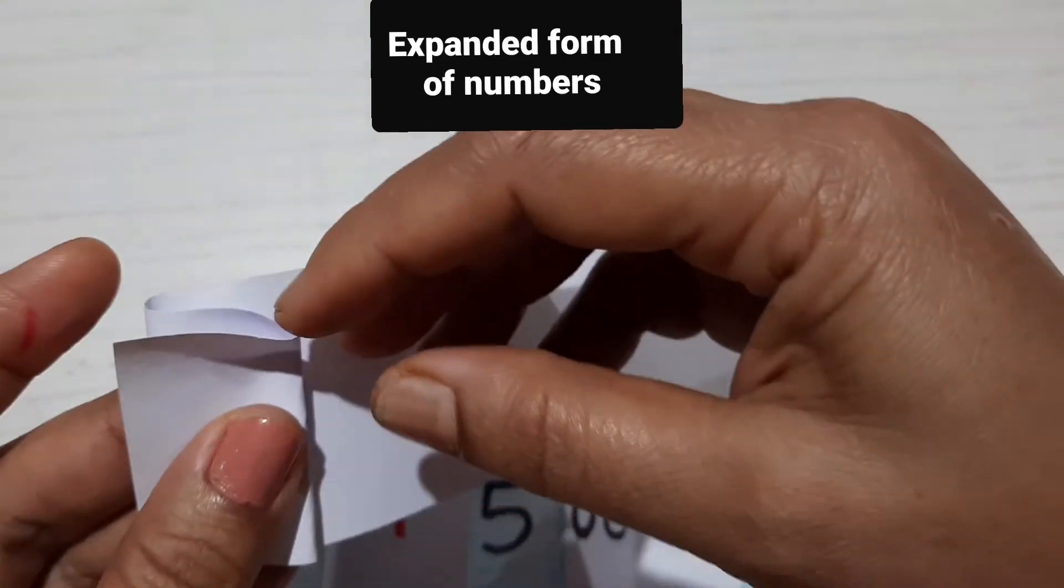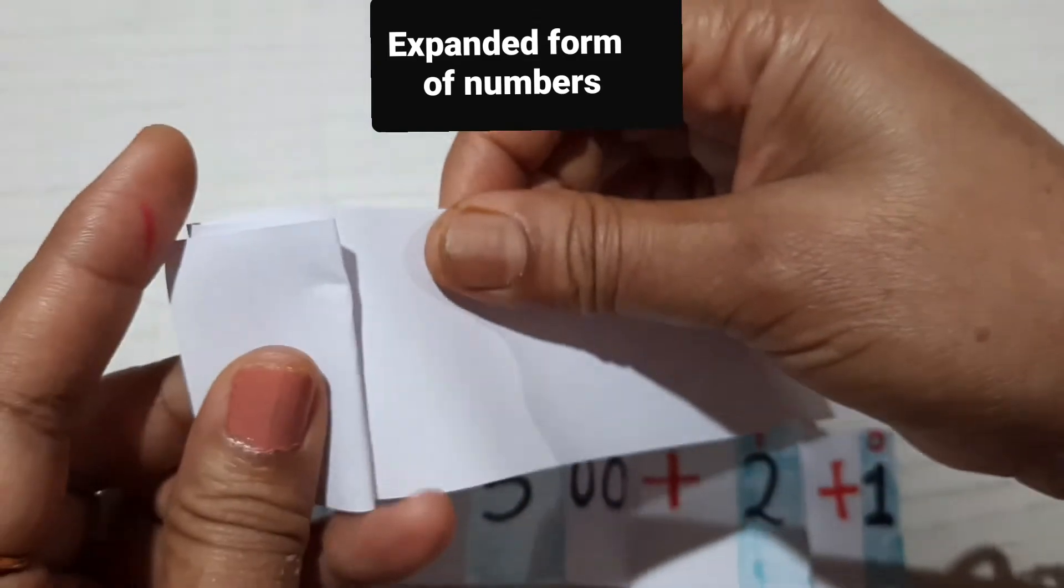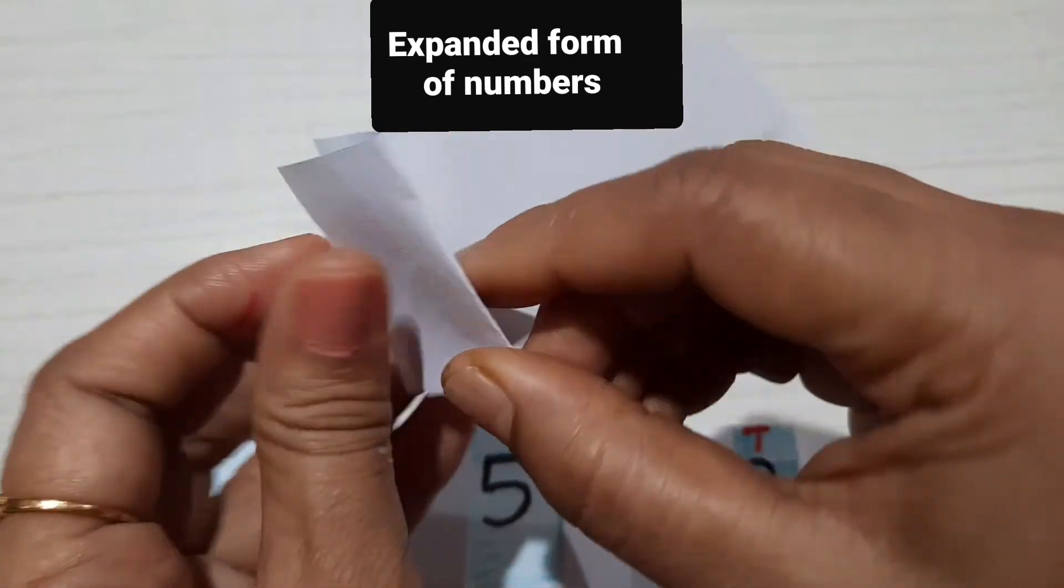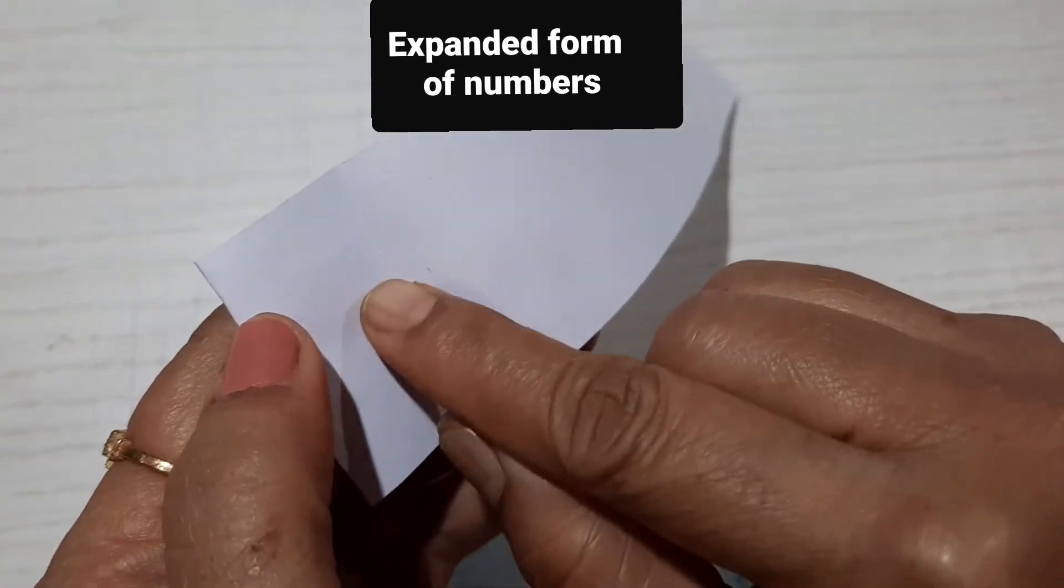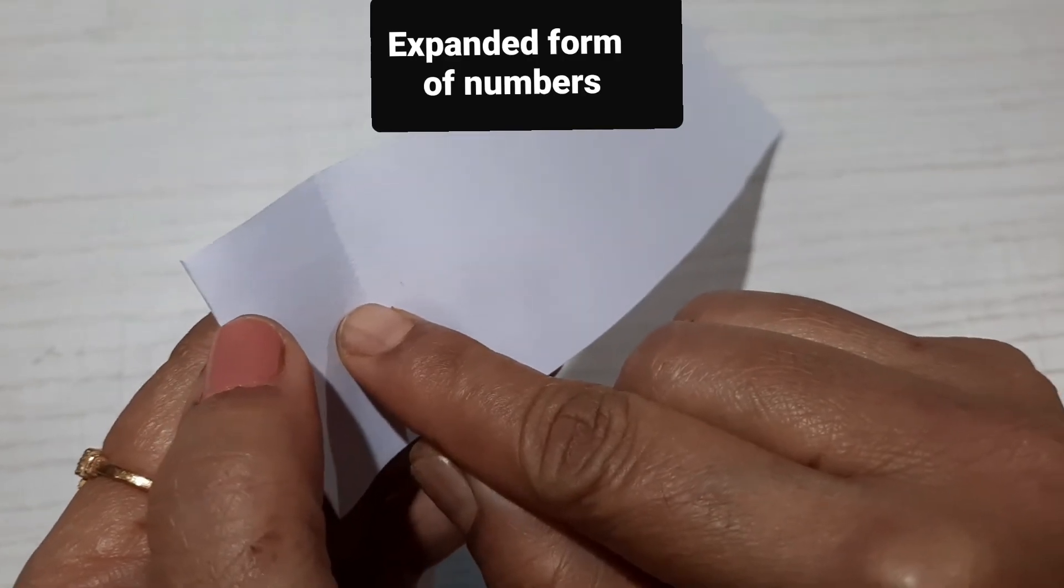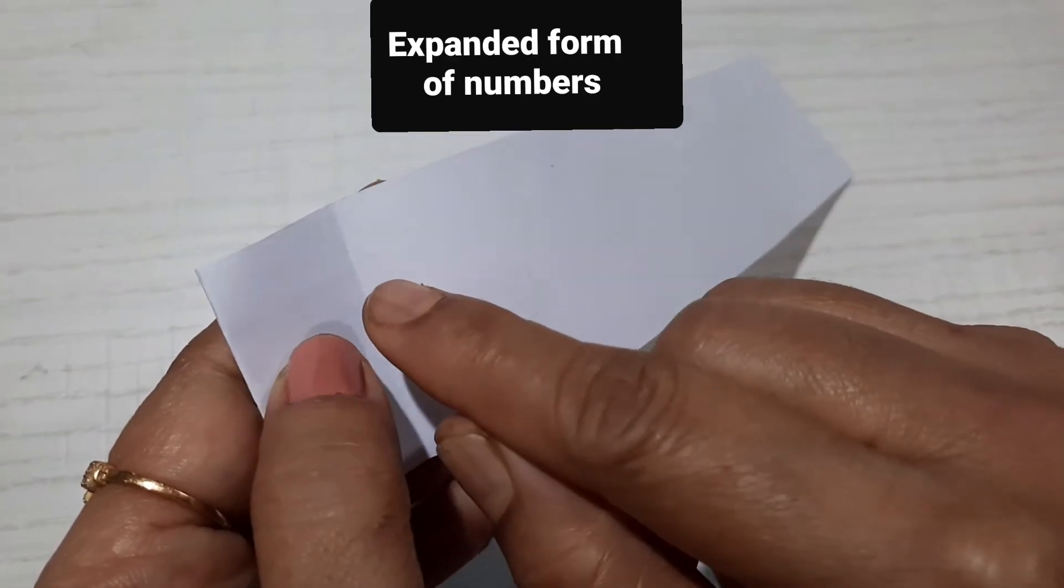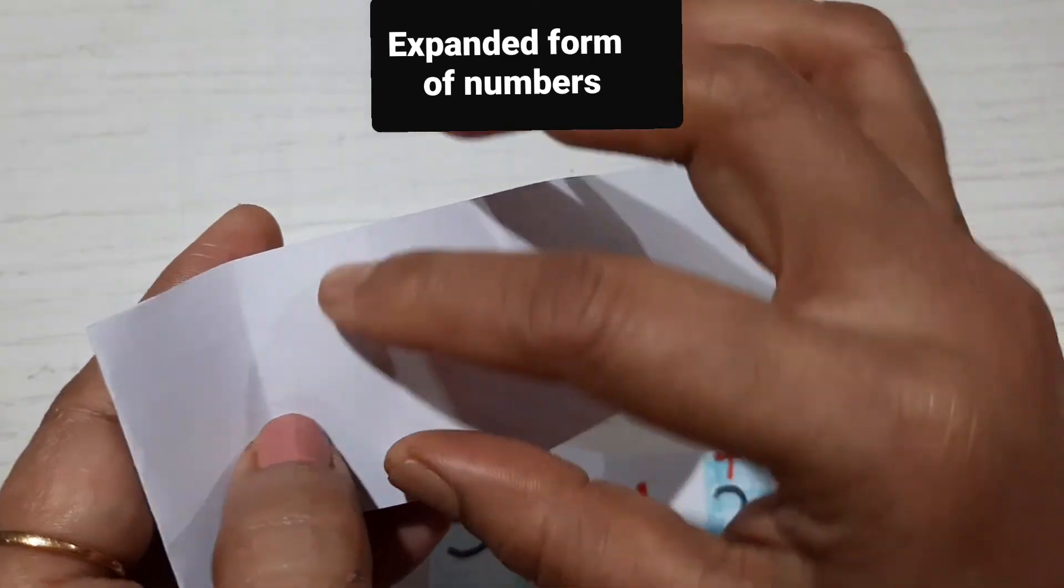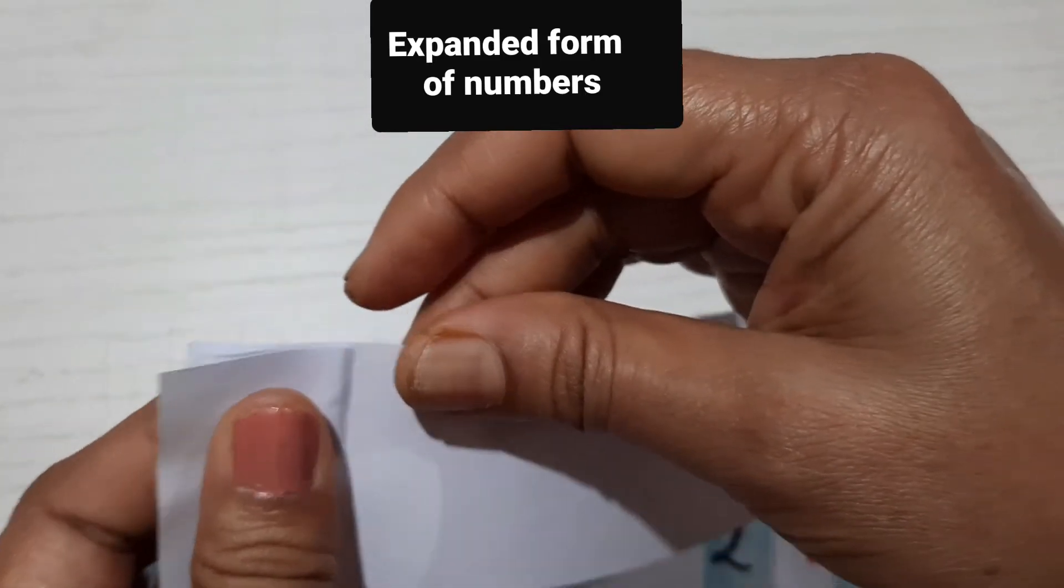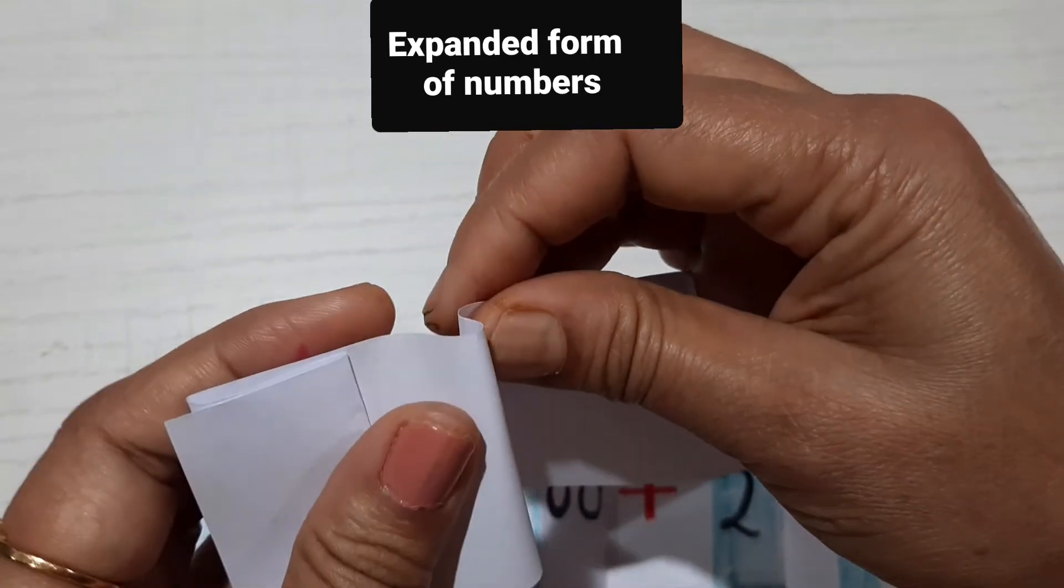Then on the back side, you write zeros—as many as the places you have taken. Then make another fold for the plus symbol and another digit.